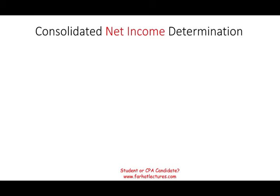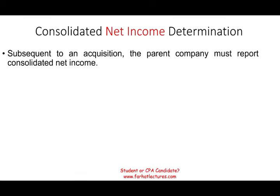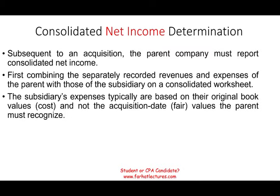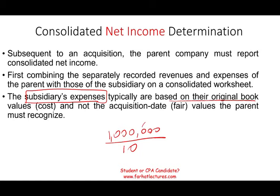Some topics need special attention. One of them is consolidated net income. After we buy a company, subsequent to the acquisition, we must report our consolidated net income, which is the net income of the parent and the subsidiary. We separately combine the revenues and expenses of the parent with those of the subsidiary. We might also have to increase our expenses a little bit, especially if we purchased those assets from the subsidiary higher than cost.